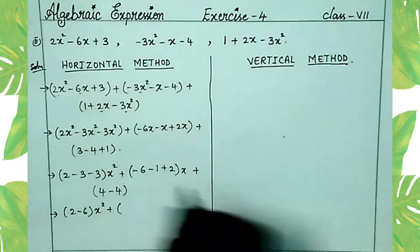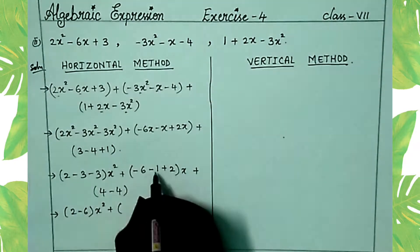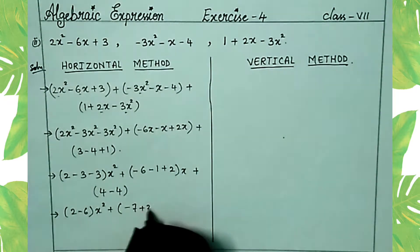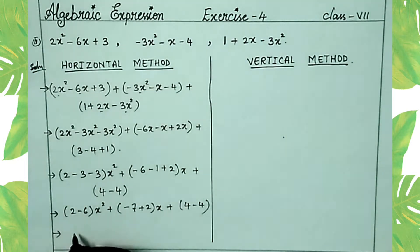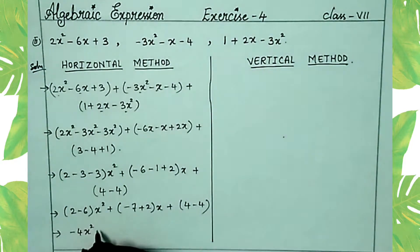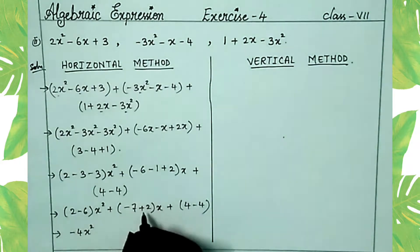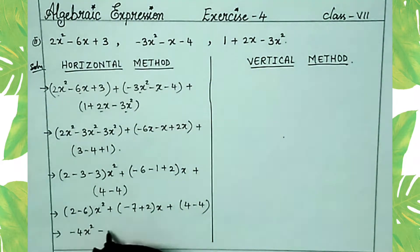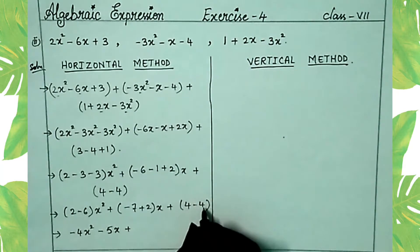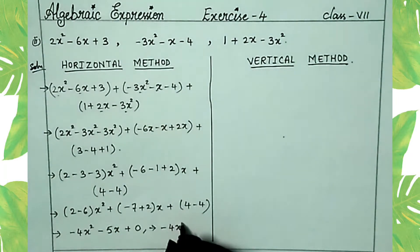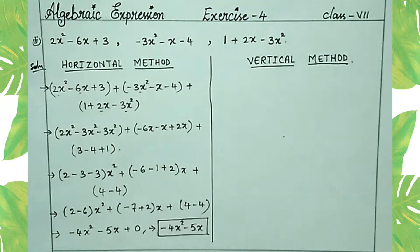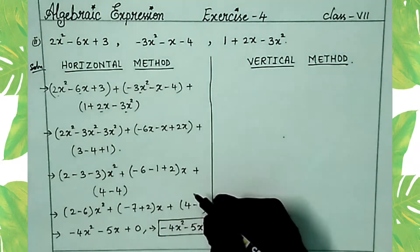For the x terms: minus 6 minus 1 equals minus 7, plus 2 gives minus 5x. The constant: 4 minus 4 equals 0. So we get the expression as minus 4x² minus 5x.